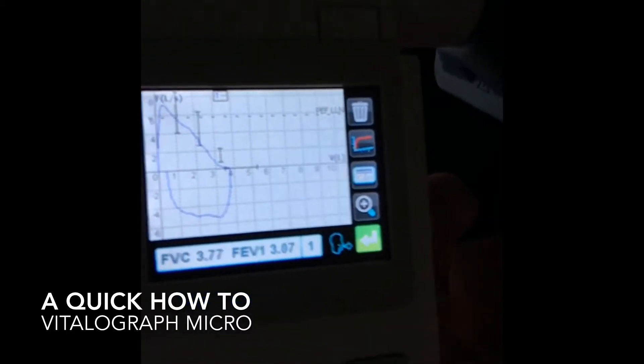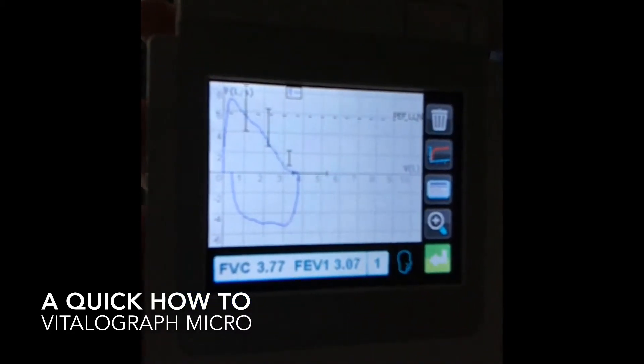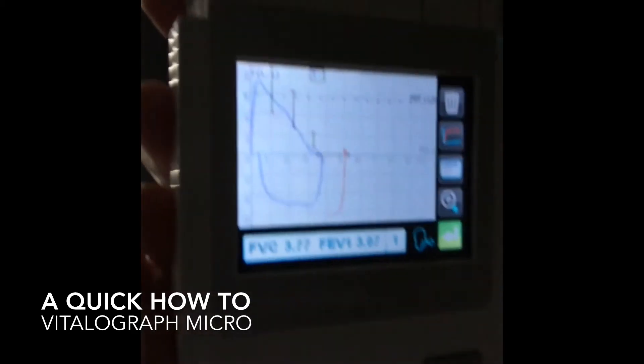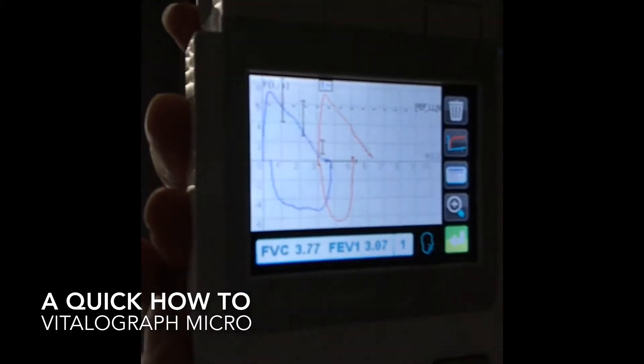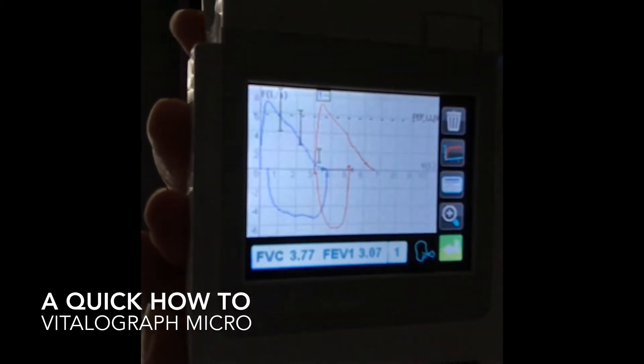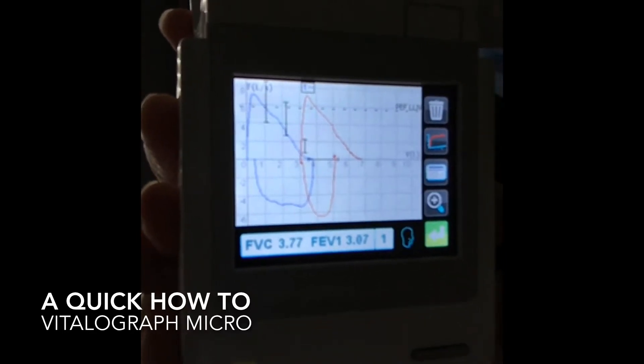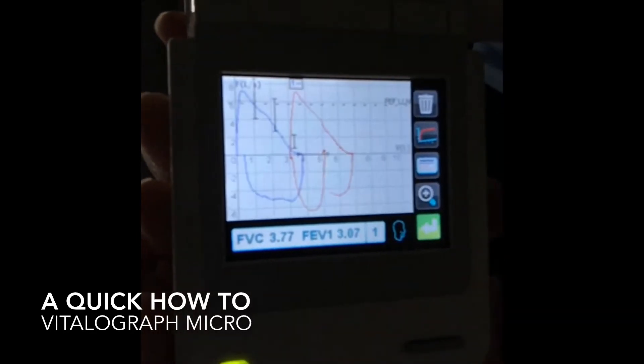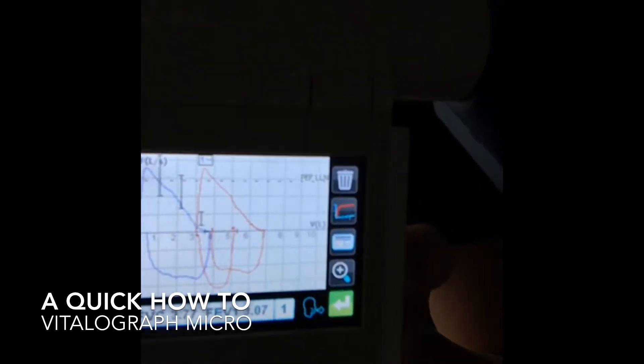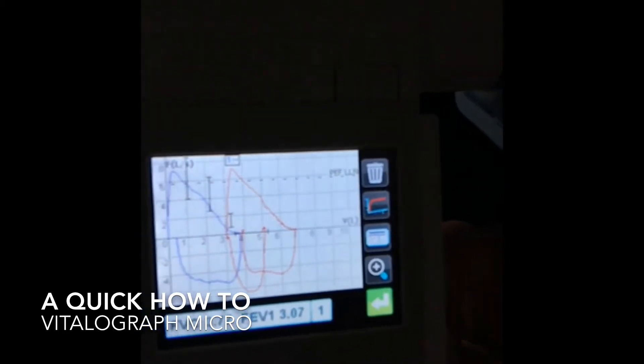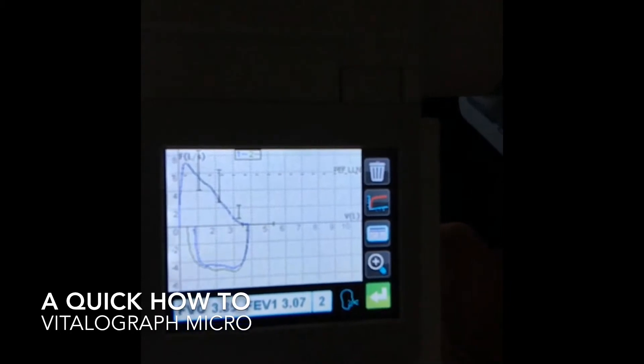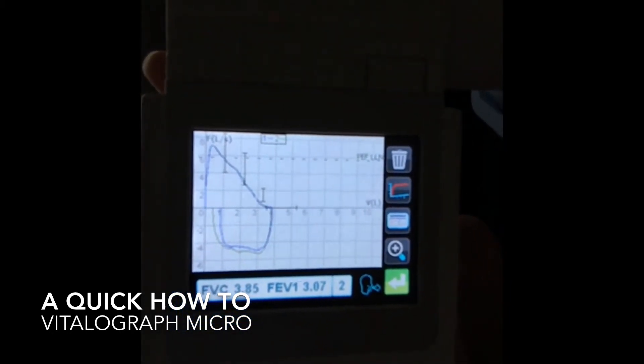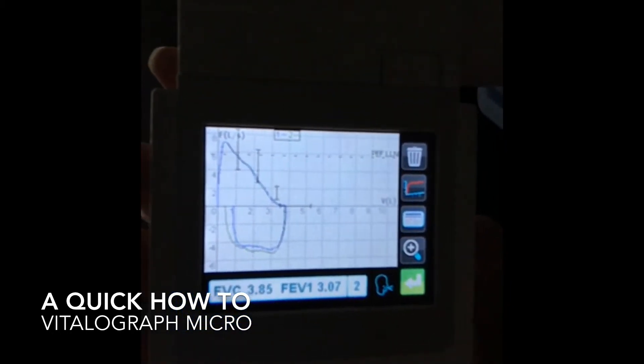When you see the little guy here in the bottom, there are no additional buttons to be pushed. Take a big, deep breath in. That finishes your loop. Great. We have number two. That's acceptable per our minimal ATS requirements.